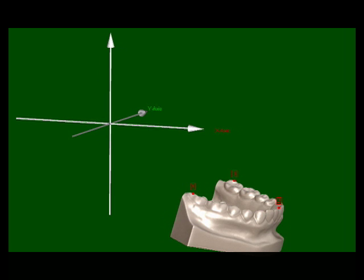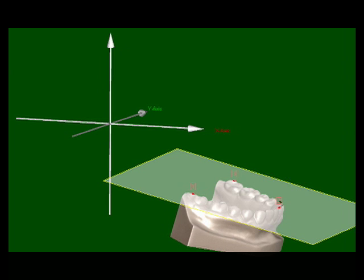Unmounted cases are articulated using average anatomic values. First, a lower occlusal plane is defined and set at an angle to the horizontal. A hinge axis is then located at a specific axis incisal distance and vertical height.